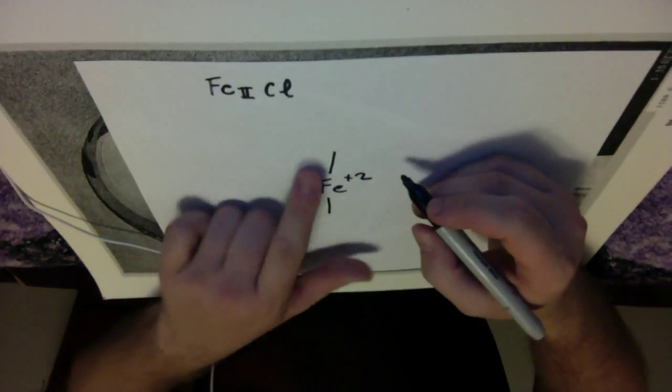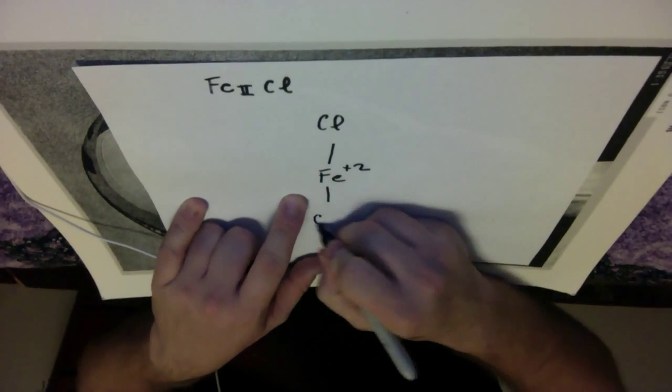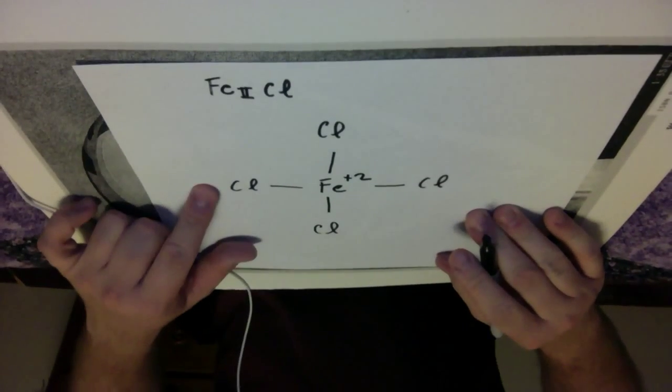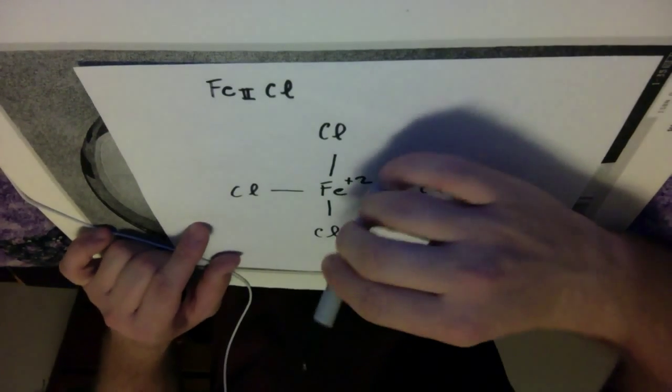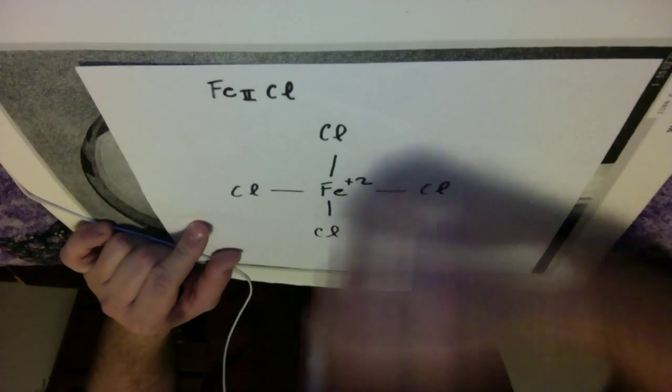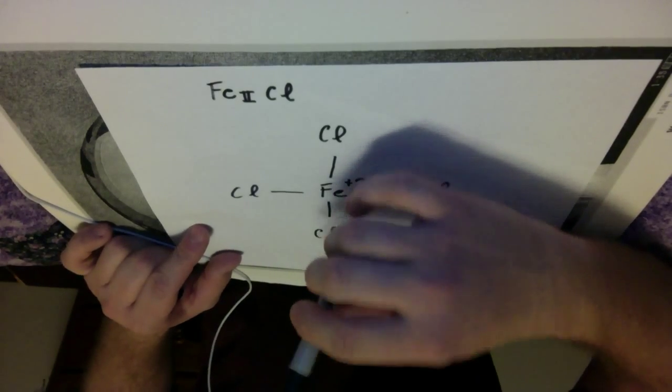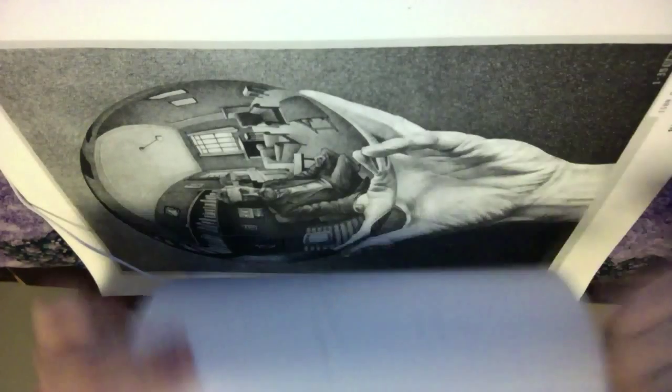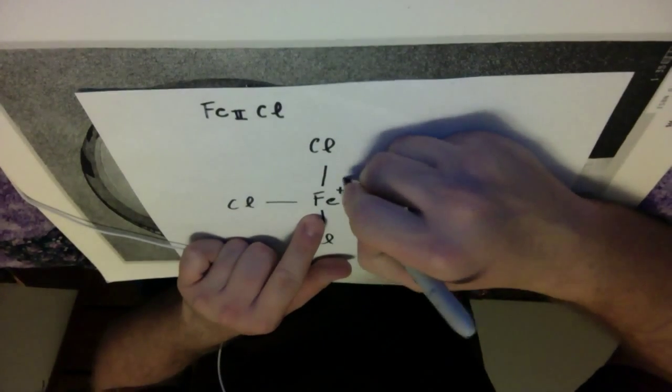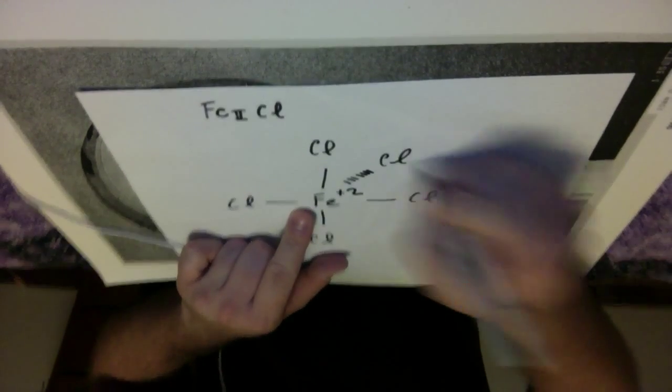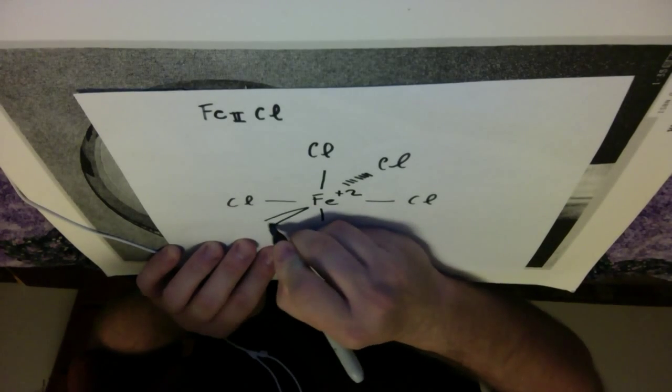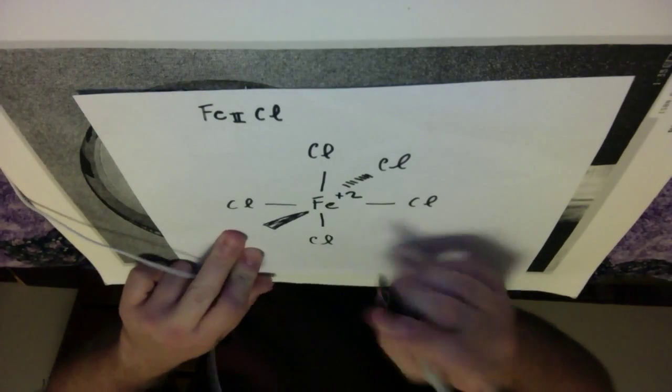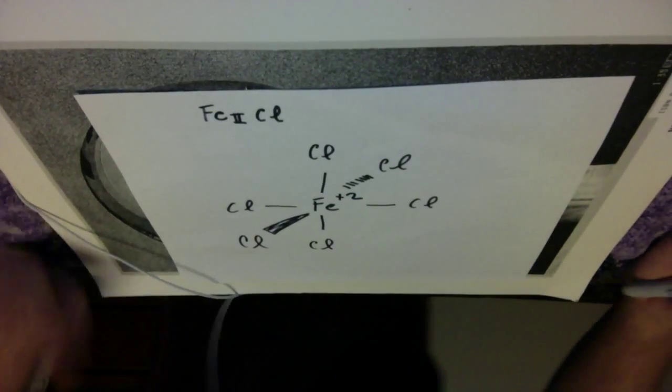So you're going to kind of have to use some imagination here. Imagine that I have chlorine coming in here, chlorine coming in here, and a chlorine coming in here, chlorine coming in here. So I've got four, and then what I want you to imagine is imagine there's kind of a line coming out of the paper, popping out of the paper in three dimensions. So up here is going to be a chlorine, and then back behind it would be another chlorine. So I'm going to draw a little dashed line, and that means that's back behind, and then I'm going to draw kind of a triangle thing here. We'll shade it in, and that means that it's popping out at me.